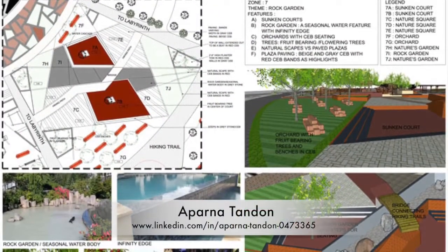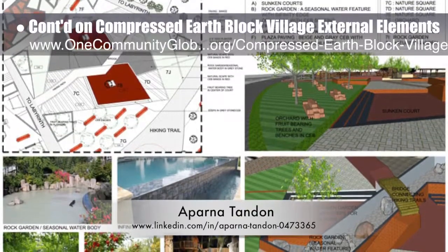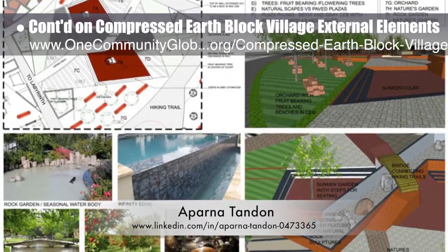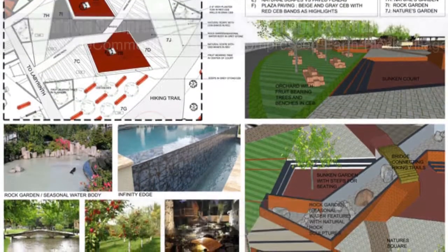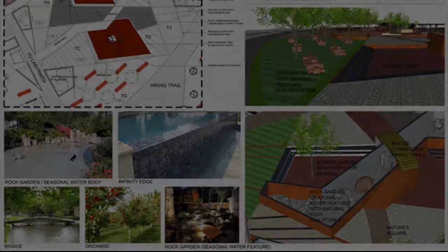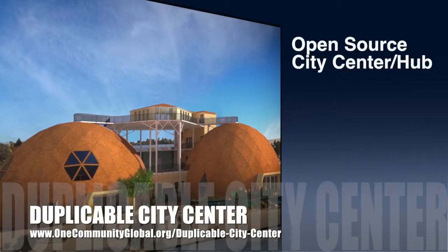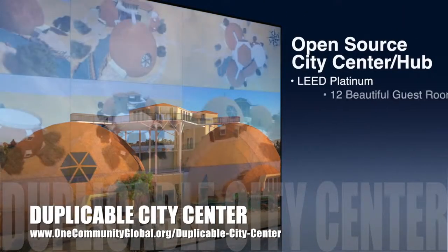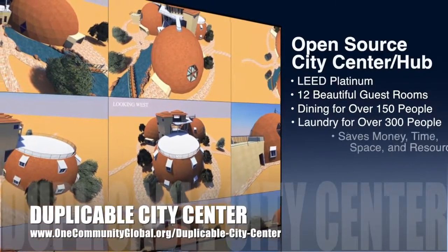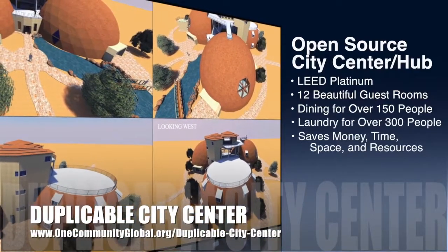Aparna Tandon, architect, continued her work on the compressed earth block village external elements. This is her 36th week, focusing on the final presentation for Zone 7, the Northwest relaxation space with seasonal ponds. One Community is also creating an open source duplicable city center designed to be LEED Platinum certified, provide 12 guest rooms, dining for over 150 people, and laundry and recreation space for over 300 people — all while saving money, time, space, and resources.